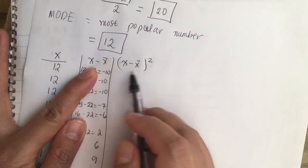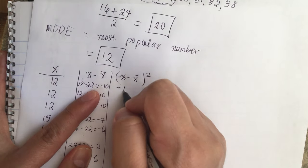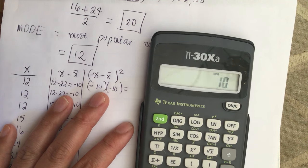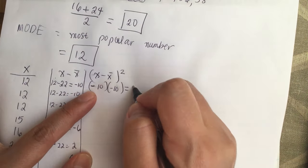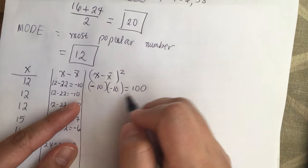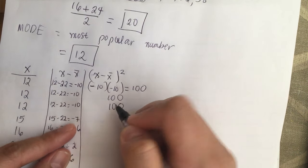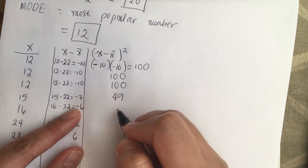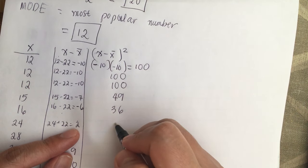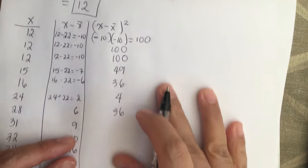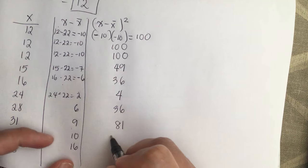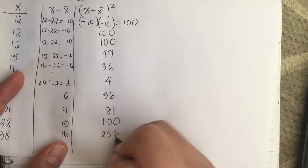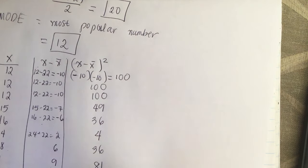Now we square each x minus x-bar value. Squaring means multiplying the number by itself. Minus 10 squared: (−10)² = 100, so we have 100, 100, 100 for the three 12s. Then 7² = 49, 6² = 36, 2² = 4, 6² = 36, 9² = 81, 10² = 100, and 16² = 256. Now we need the sum of this column.